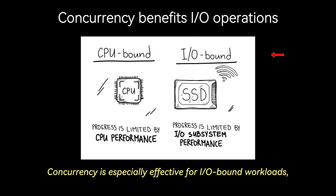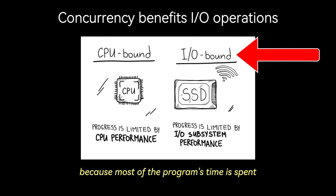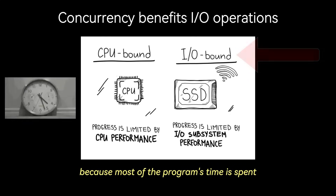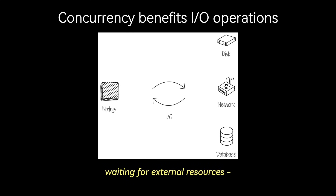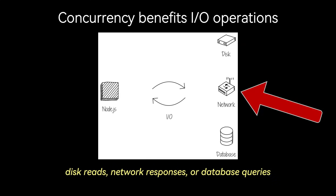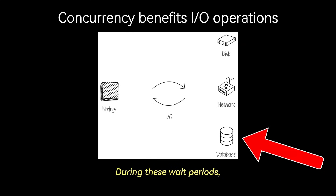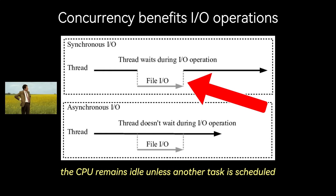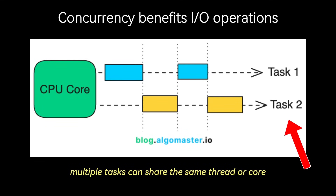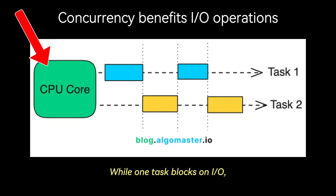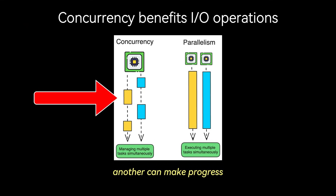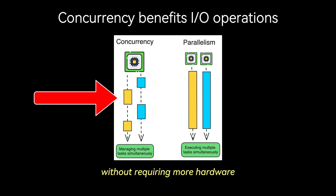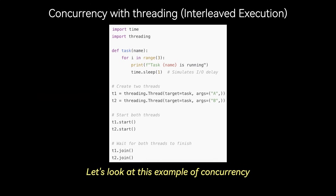Concurrency is especially effective for I/O-bound workloads because most of the program's time is spent waiting for external resources — disk reads, network responses, or database queries. During these wait periods, the CPU remains idle unless another task is scheduled. With concurrency, multiple tasks can share the same thread or core: while one task blocks on I/O, another can make progress. This leads to better CPU utilization without requiring more hardware. Let's look at this example of concurrency with threading, or interleaved execution.